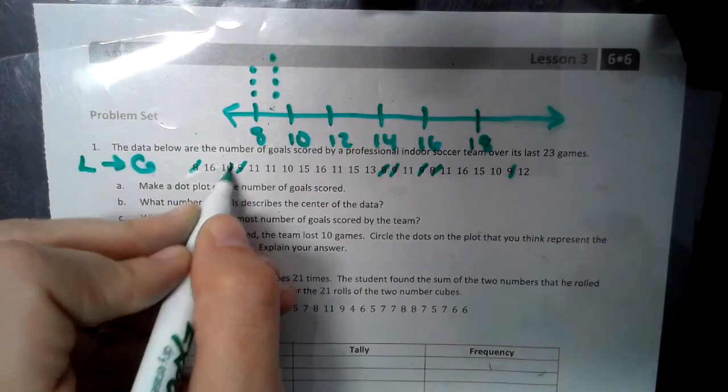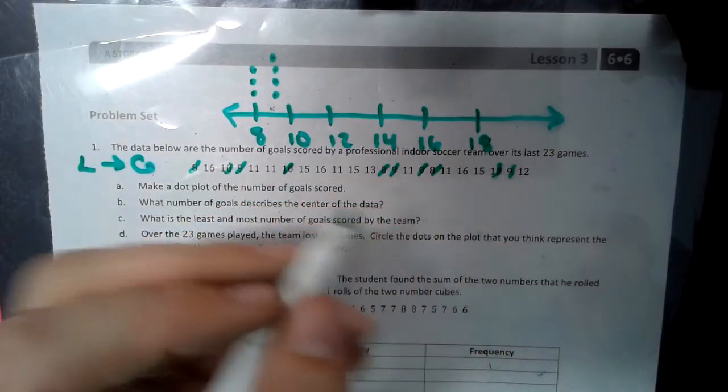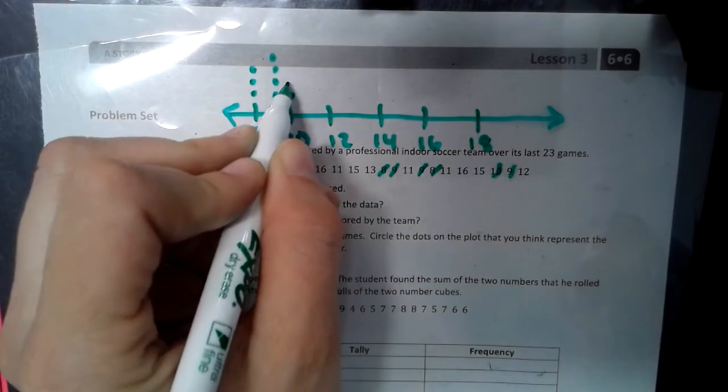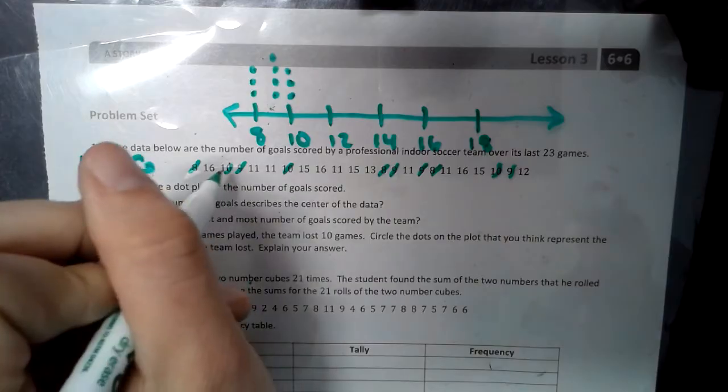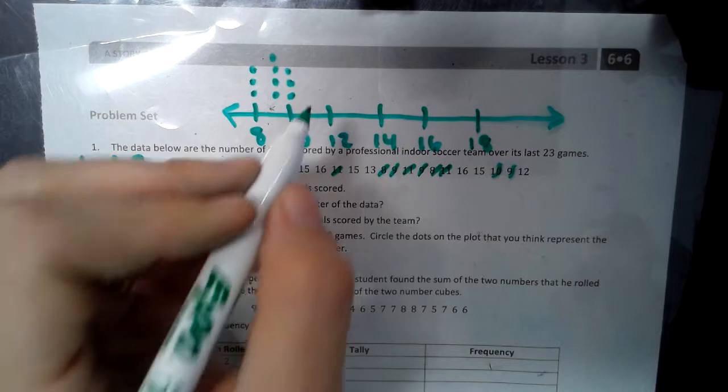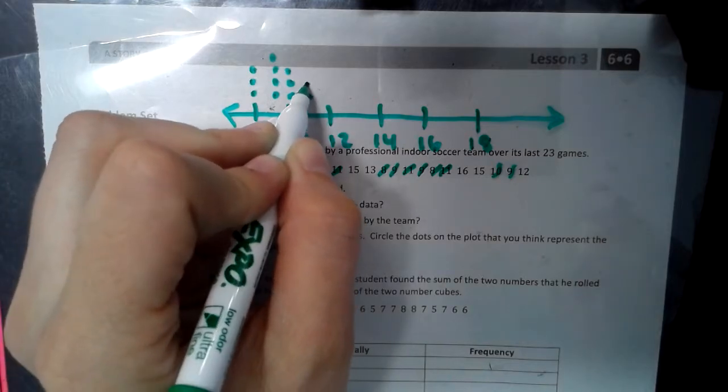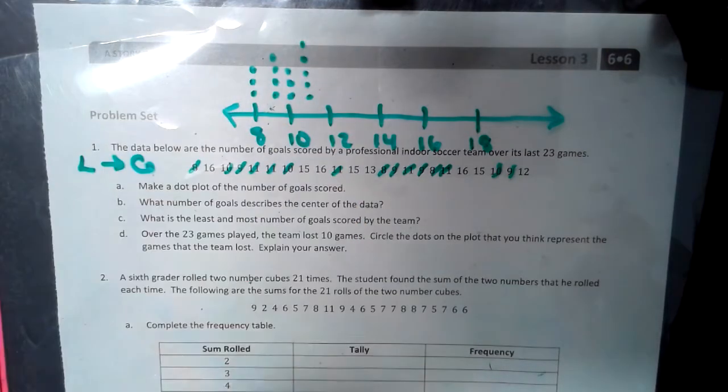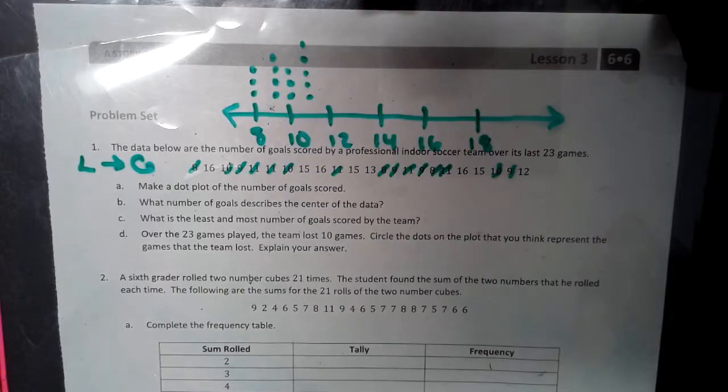And then we have 10's. 1, 2, 3 10's. So, start 1, 2, 3. And we've got some 11's. 1, 2, 3, 4, 5 11's. So, 1, 2, 3, 4, 5 11's. As you can see, I'm concentrating on how to make my stacks all start at the same height. And then you can really tell who's got the most.